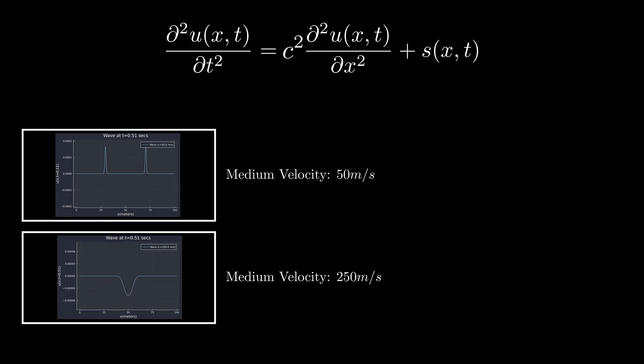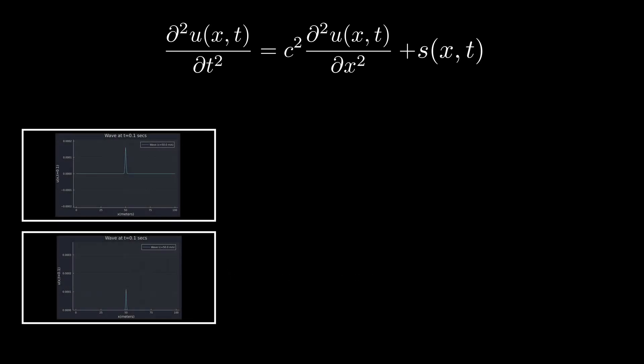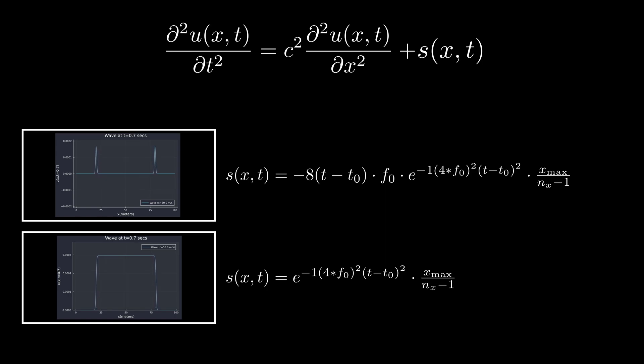In this case, it is dependent on the material properties like density. The higher the value of C, the faster the wave will propagate. Finally, S is the source function, and it is responsible for initiating the wave at location x and time t. The definition of this source function also dictates the shape of the resulting wave.